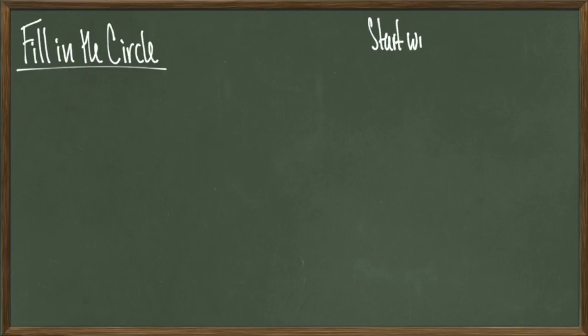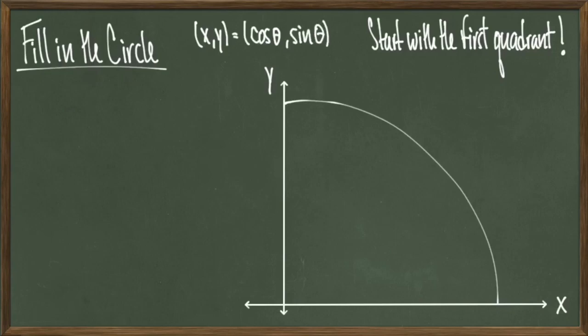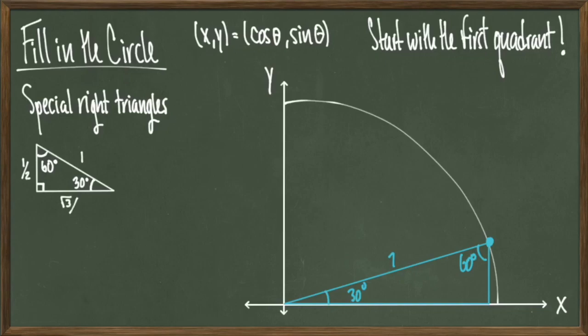Let's go ahead and start filling in the circle with some common information. We're going to start with the first quadrant — the upper right-hand slice. Remember that our point can be represented by cosine of theta and sine of theta for the same theta. We're going to inscribe our unit circle with special right triangles. These will give us the common angles and common points on the unit circle that you're generally asked to learn in an algebra class, but instead of just memorizing, we're going to use a more constructive process.